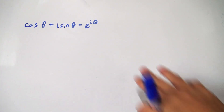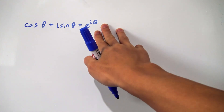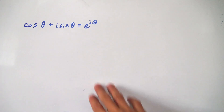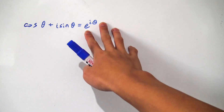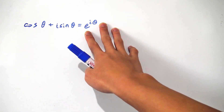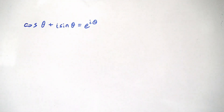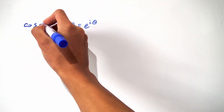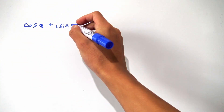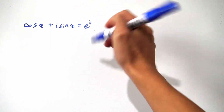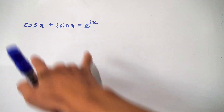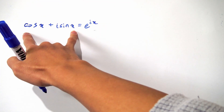Hello everybody, and today we're going to be proving Euler's formula using Taylor series. Let's forget about the e to the i theta part for now — we'll come back to that in a second. First, let's replace all the thetas with x's so things are a bit nicer to look at when we do the Taylor series expansions. Let's get started.